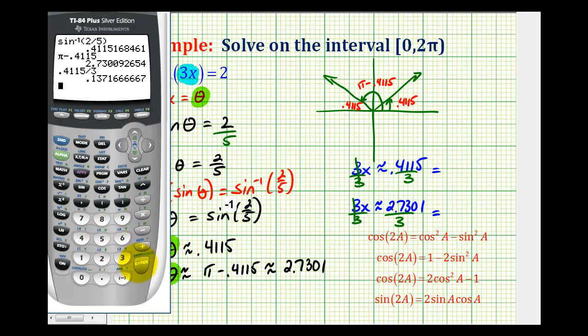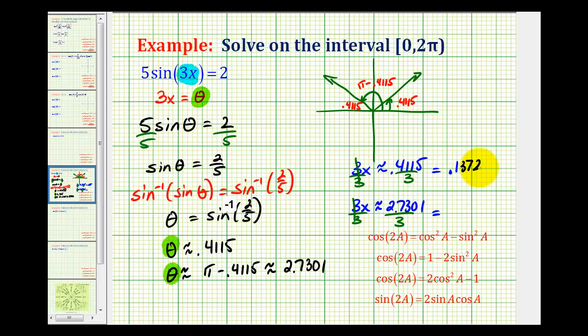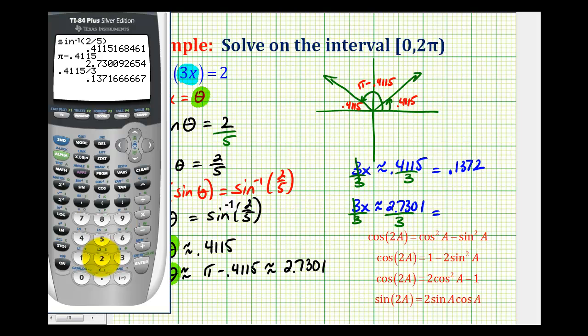So x is approximately 0.1372 radians, and the second solution is x ≈ 0.9100 radians.